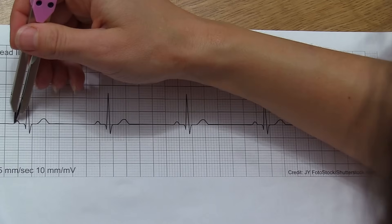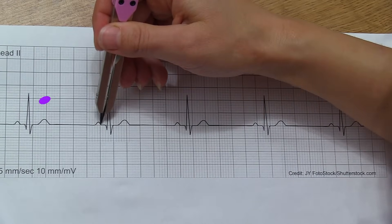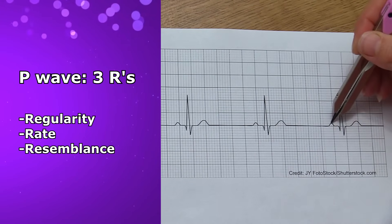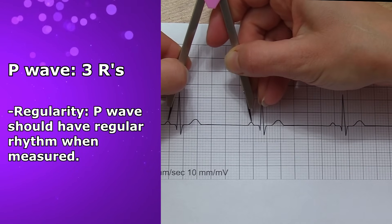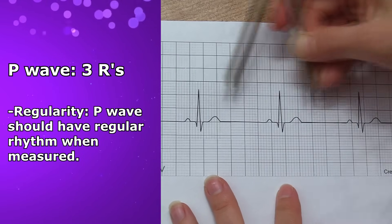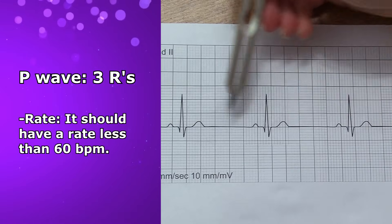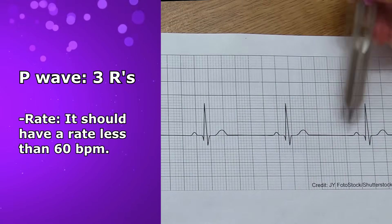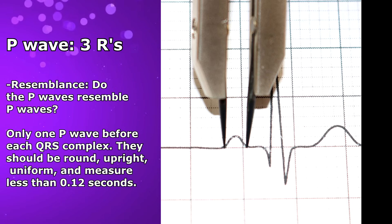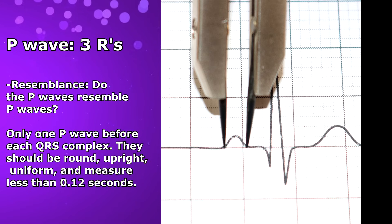First, P — this refers to the P wave. We're going to look at the three R's of the P waves: regularity, rate, and resemblance. For regularity, the P wave should have a regular rhythm — take your calipers and measure P wave to P wave and it should have the same distance between them. For rate, whenever you count those P waves, that represents the atrial rate, and you should have a rate of less than 60. For resemblance, look at the P waves — there should only be one P wave in front of each QRS complex, they should be round and upright, and they should measure less than 0.12 seconds.